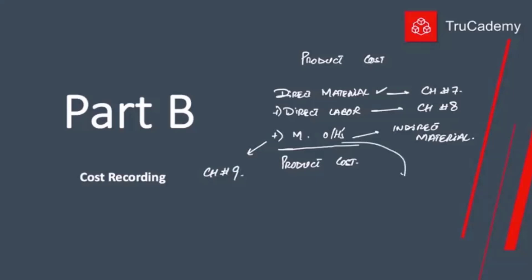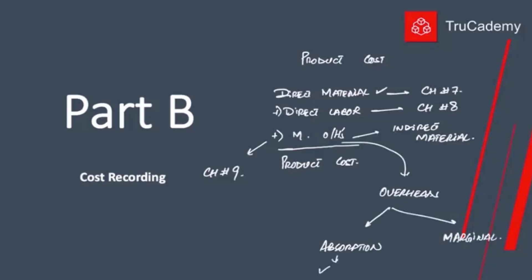When we talk about overheads, there are two costing principles for how we treat them. One is called absorption costing and the second is called marginal costing. For external reporting we always use absorption costing, while for internal planning, controlling, decision making, and information provided to managers we use marginal costing. All these things we will be covering in the next few chapters.